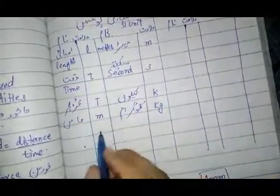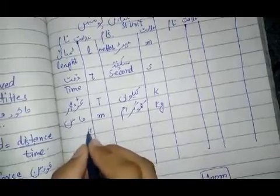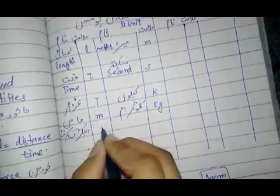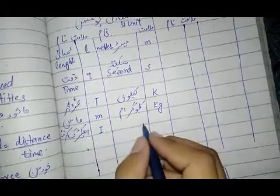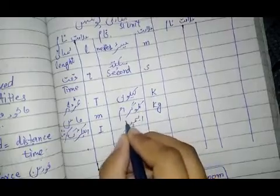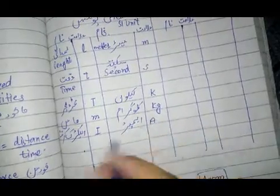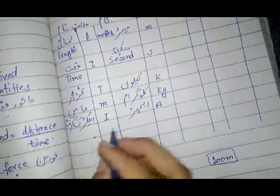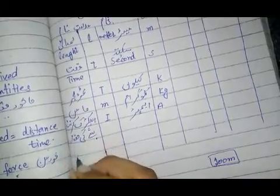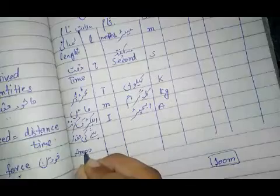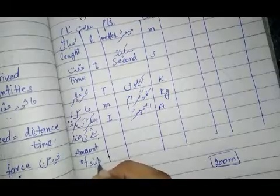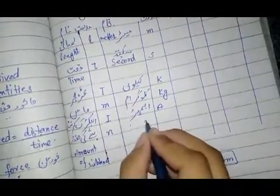The next base quantity is electric current. Electric current is represented by 'I', and its unit is the ampere, represented by 'A'. After that comes the amount of substance, which we use in chemistry. It is represented by small 'n', and its unit is the mole, with symbol 'mol'.